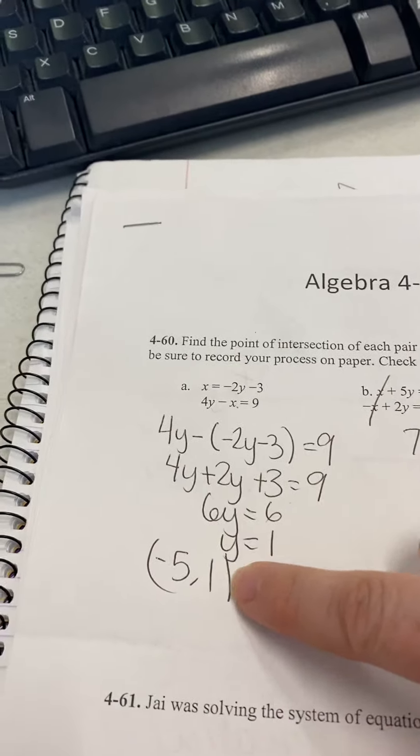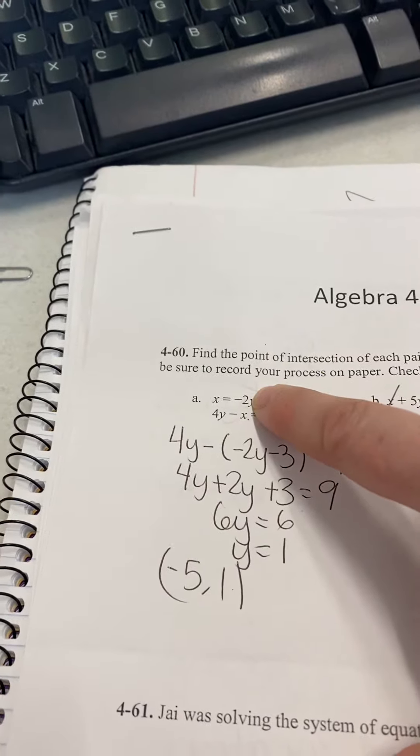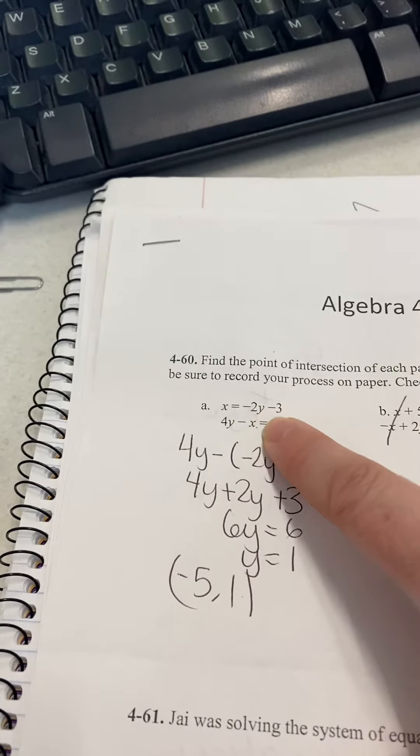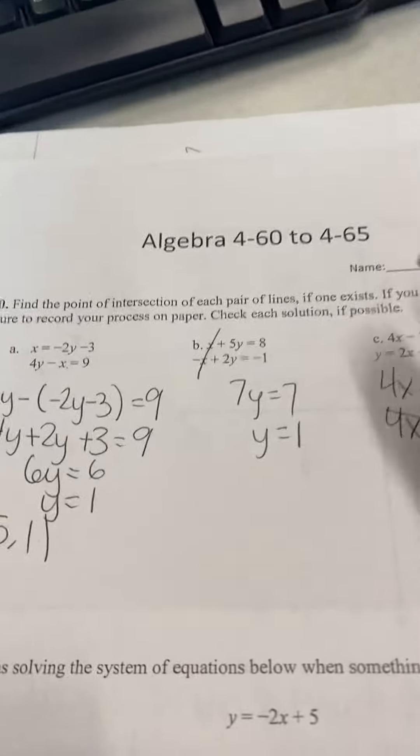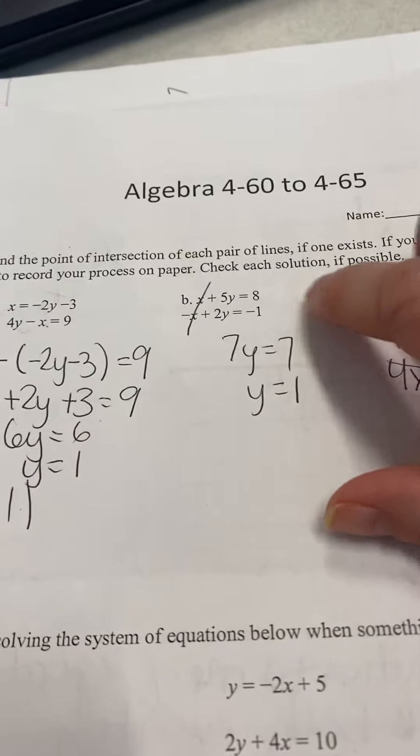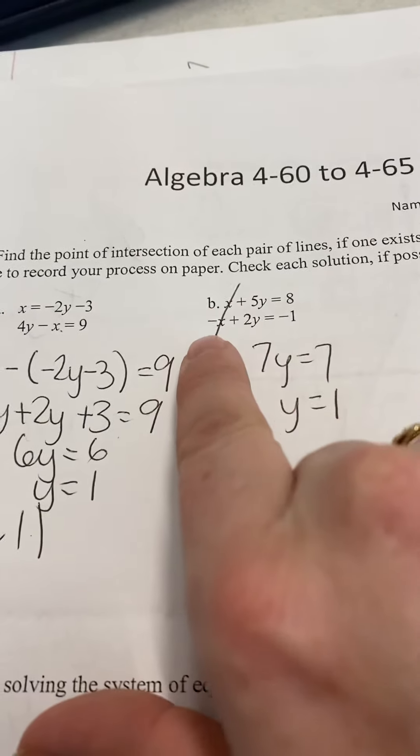Once you know what y is, you can plug it back in. Negative 2 times 1 is negative 2, minus 3 makes it negative 5. So the answer is (-5, 1). On part b, I see a positive x and a negative x, which means those will eliminate pretty easily.